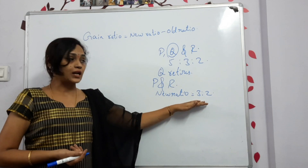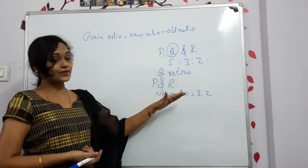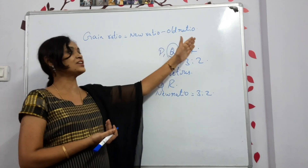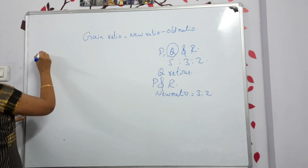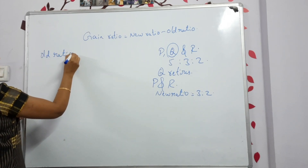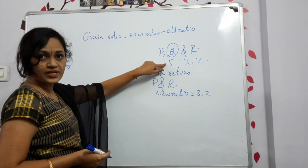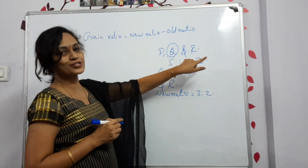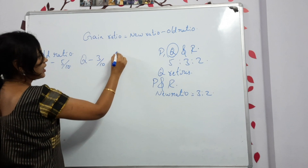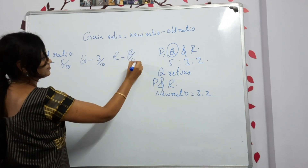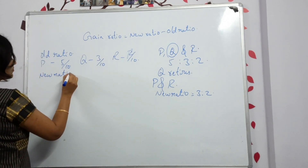Now let's find out the gain ratio of P and R. First, find the old ratio. P's old share = 5/10, Q's old share = 3/10, and R's old share = 2/10 (since 5+3+2 = 10). The new ratio: P gets 3/5 and R gets 2/5.